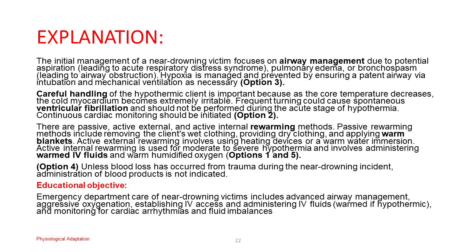There are passive, active external, and active internal rewarming methods. Passive rewarming includes removing the client's wet clothing, providing dry clothing, and applying warm blankets. Active external rewarming involves using heating devices or warm water immersion. Active internal rewarming is used for moderate to severe hypothermia and involves administering warmed IV fluids and warm humidified oxygen, options 1 and 5. Option 4: unless blood loss has occurred from trauma, administration of blood products is not indicated.